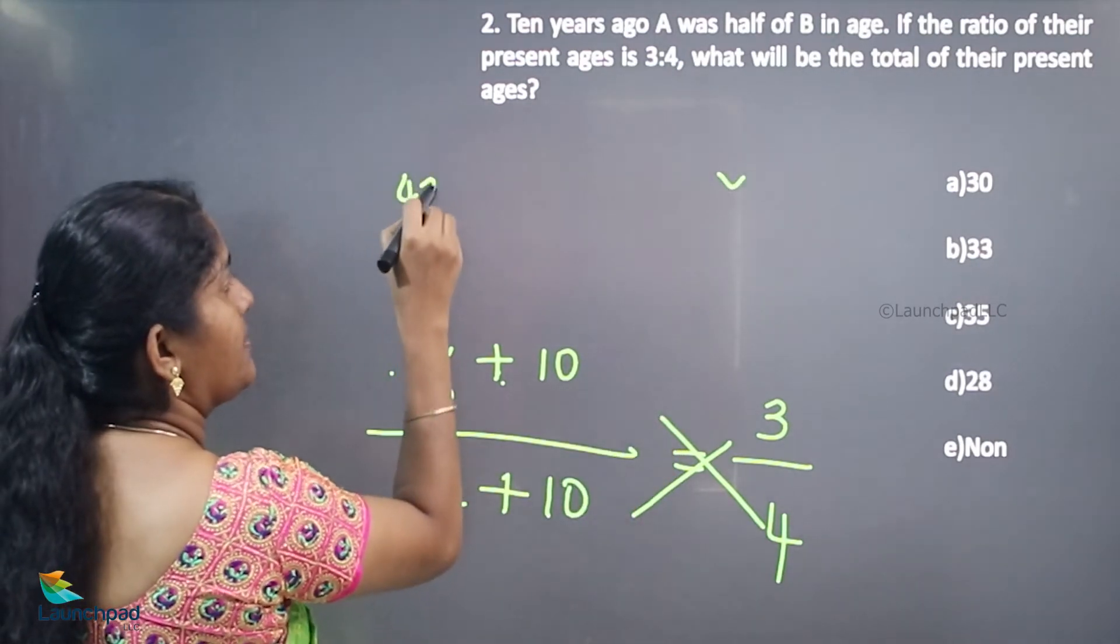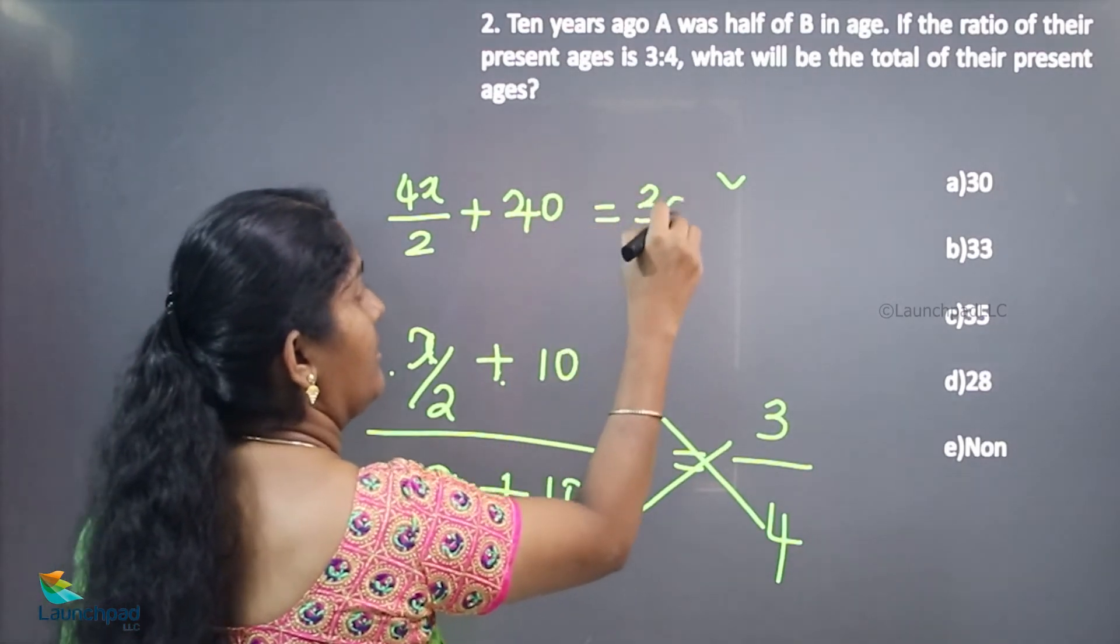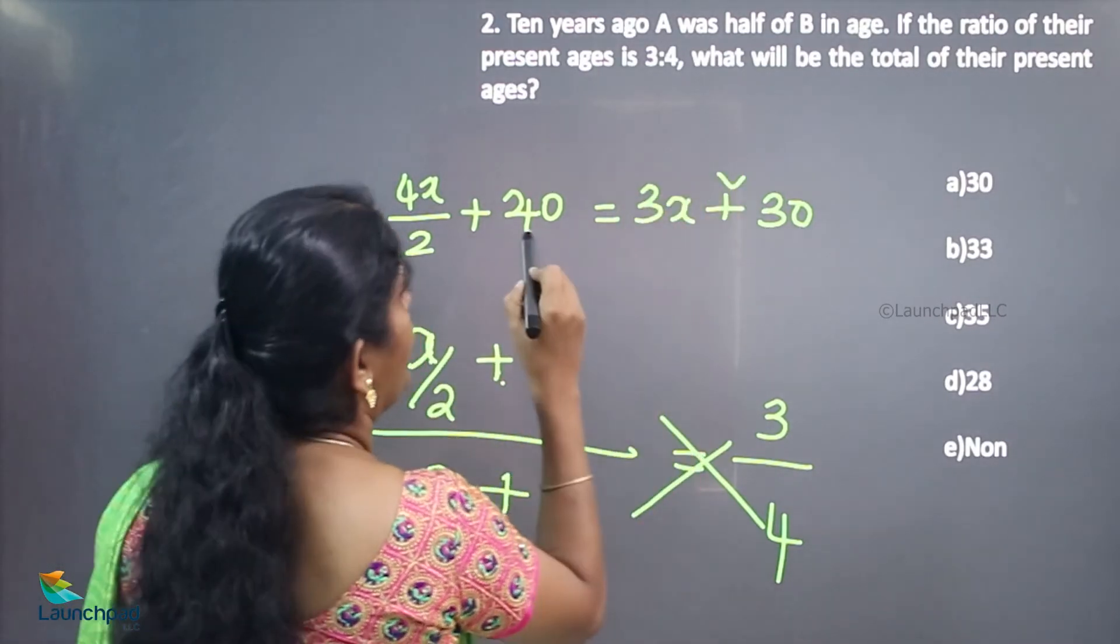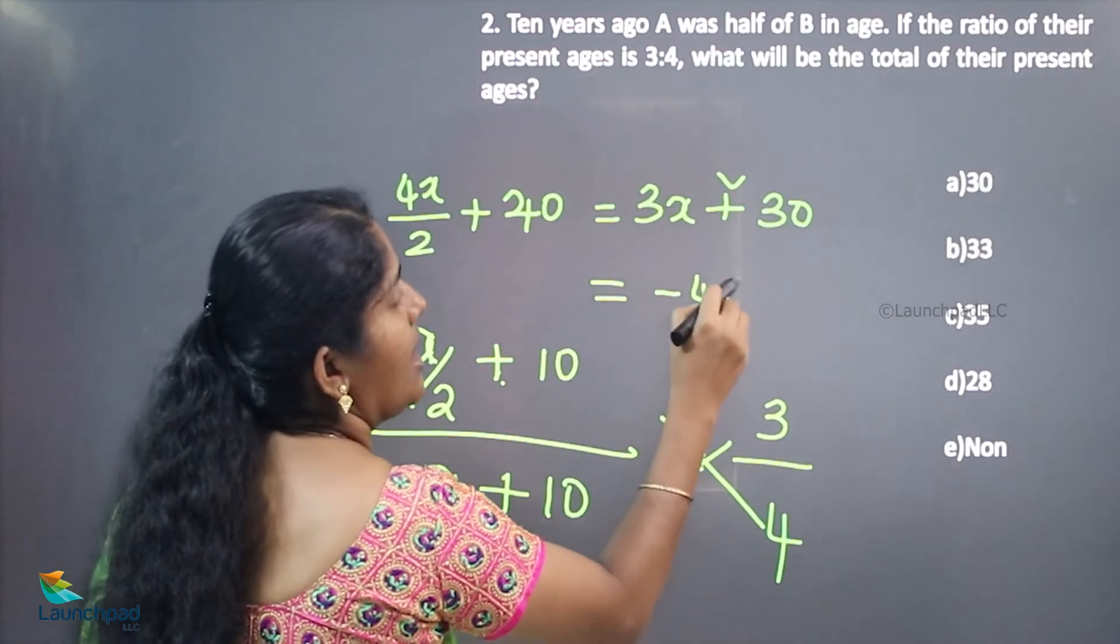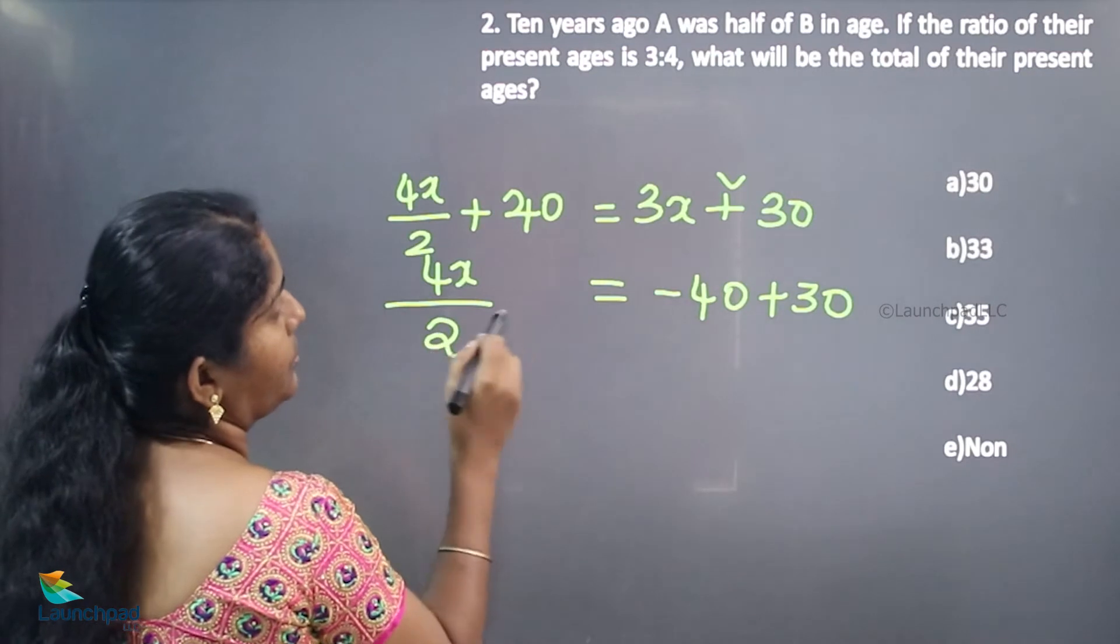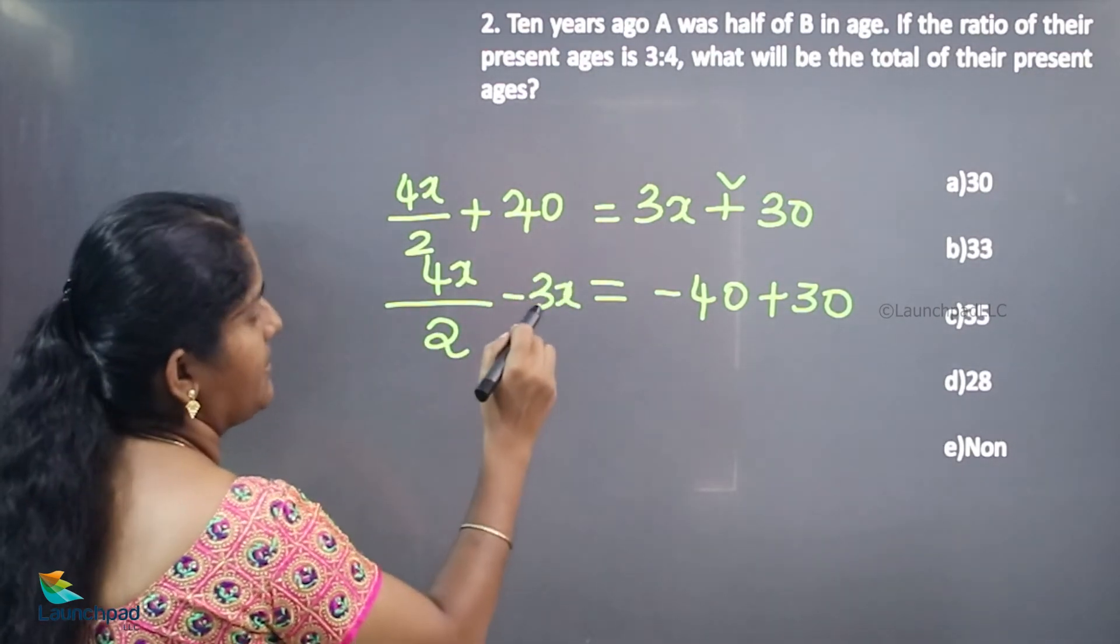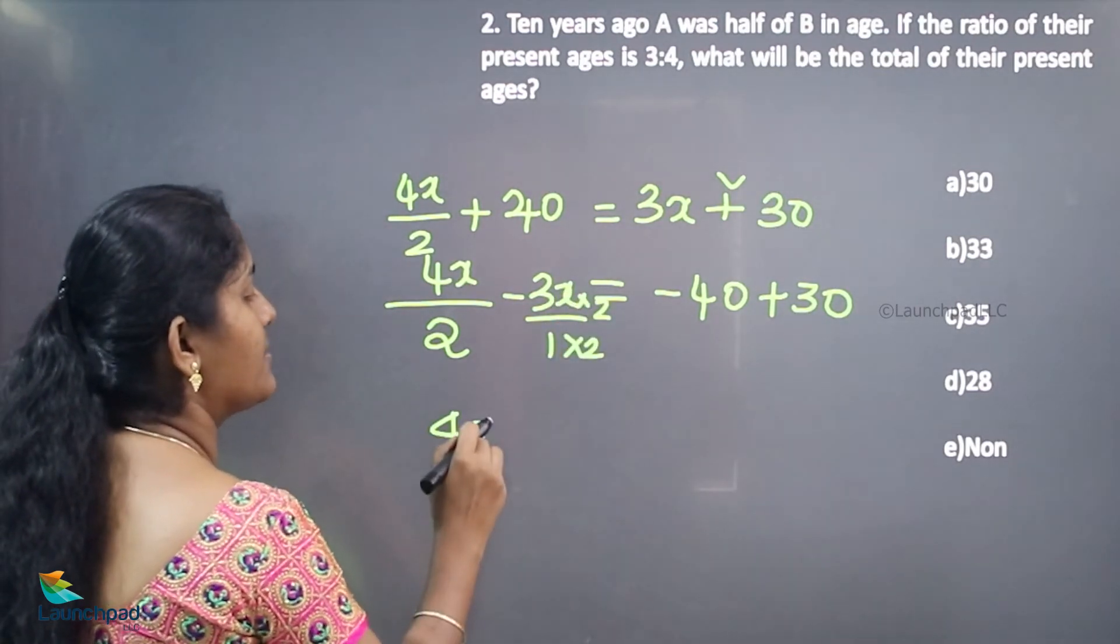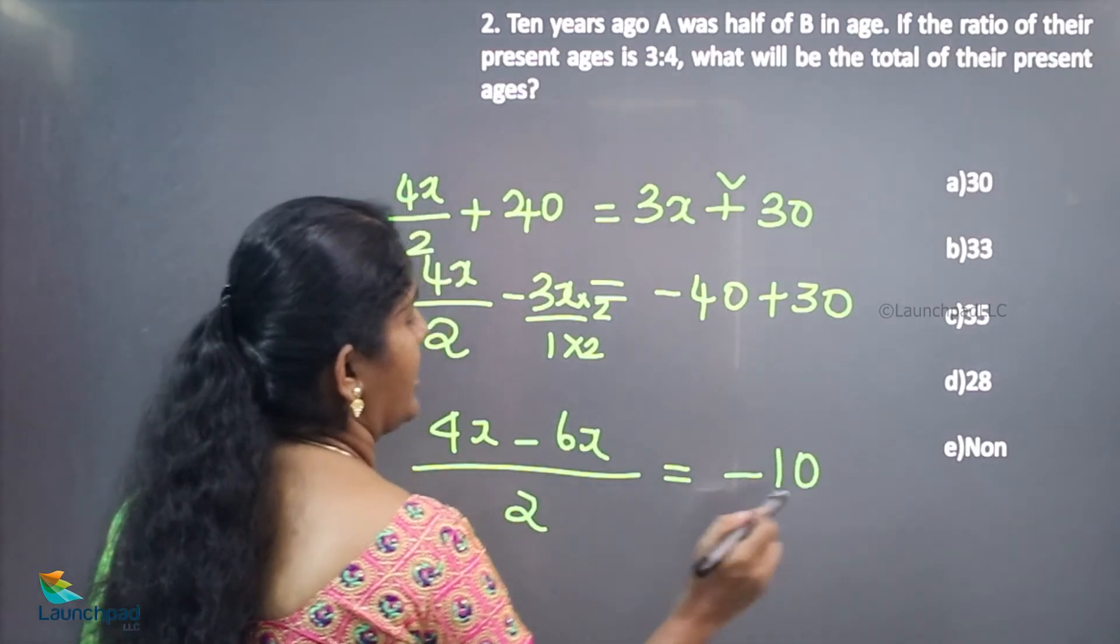Moving 40 to the other side gives -40 + 30 = -10. Now, 2X minus 3X. Taking the LCM, (4X - 6X)/2 = -10.